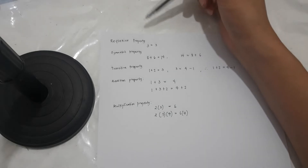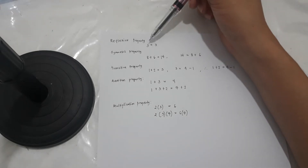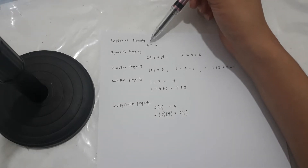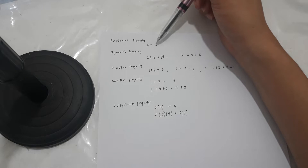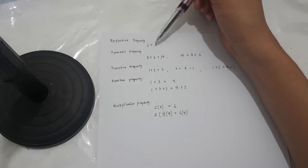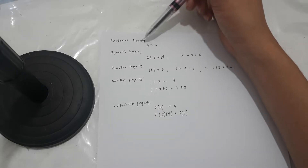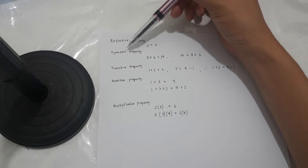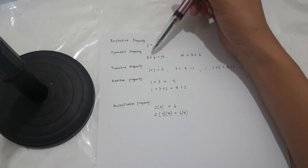The first one is the reflexive property, which states that, for example, 3 is equal to 3. So any number is equal to itself.